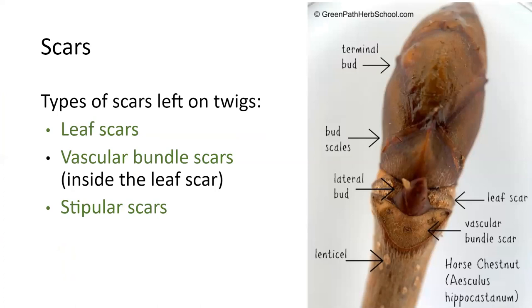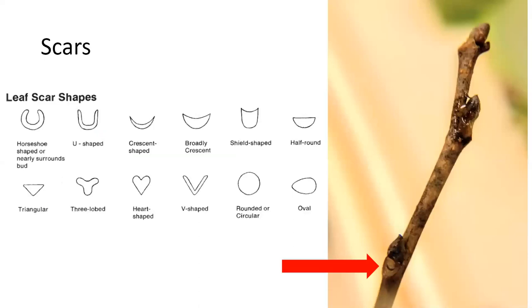Looking at where the leaf was attached on the twig can also tell you information. There are different types of scars on twigs. We have leaf scars — you can see that right below the axillary bud. This is actually a photograph of a buckeye, a type of buckeye called horse chestnut. Inside the leaf scar you can see the vascular bundle scars — that's where the xylem and phloem connected through to the leaf petiole. And finally you can see stipular scars.